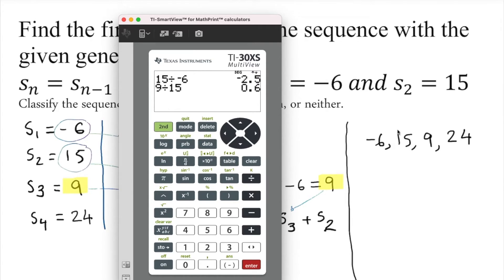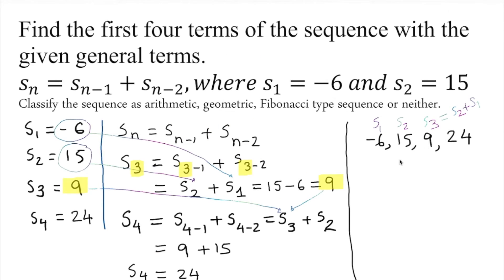The next option is add the previous two. Since we know the first, this is s_1, this is s_2. Now what is s_3? s_3 by definition is s_2 plus s_1, so we just substitute it here. Add the previous two. In this case, 15 plus negative 6 which is 9. Now we're going to work out on the next one: 9 plus 15, which is 24. Yeah, that works.